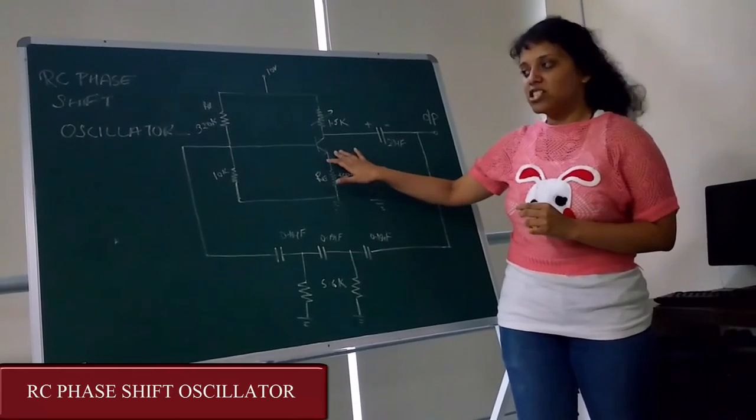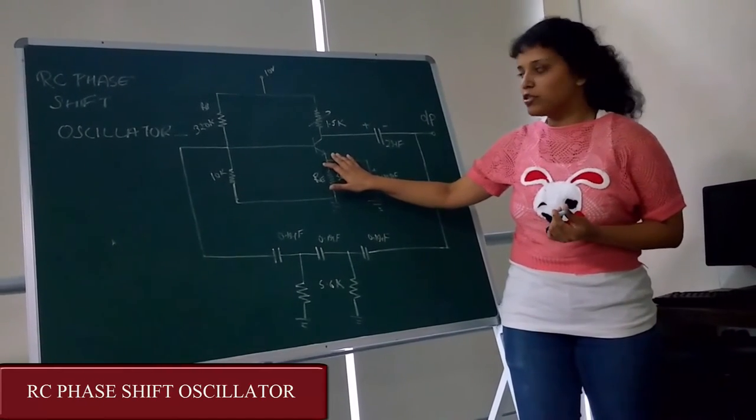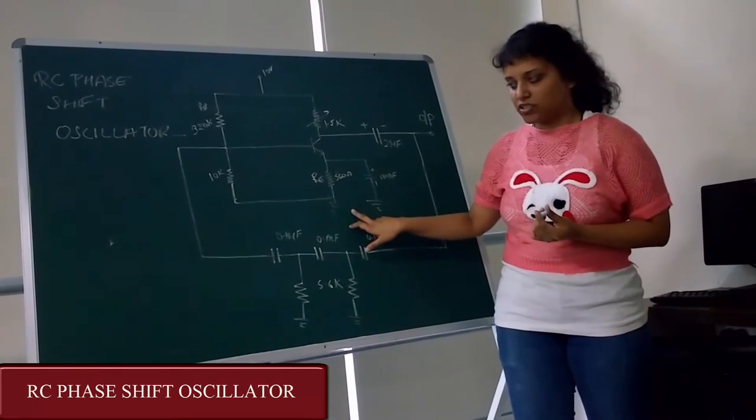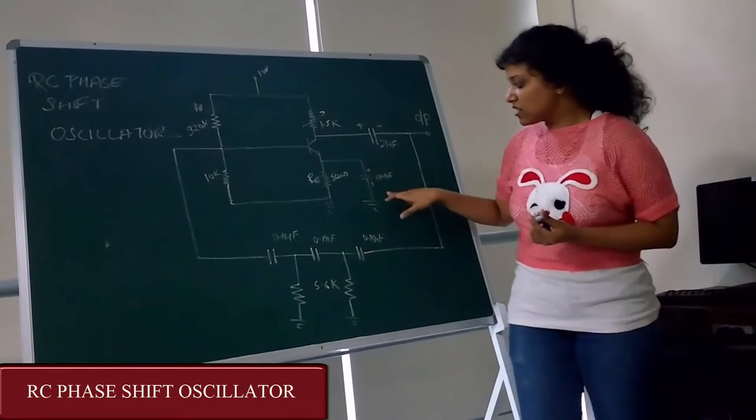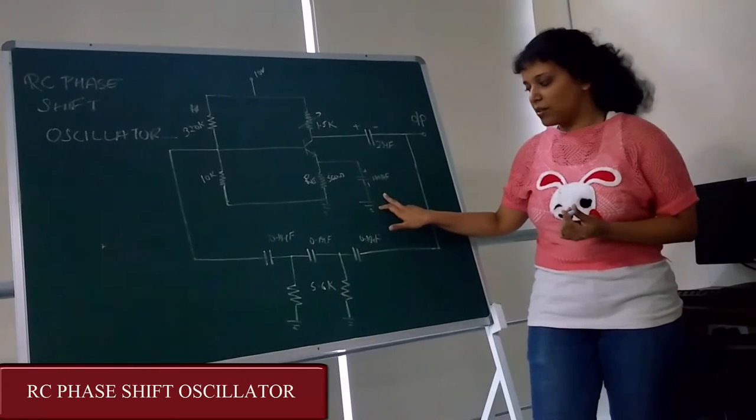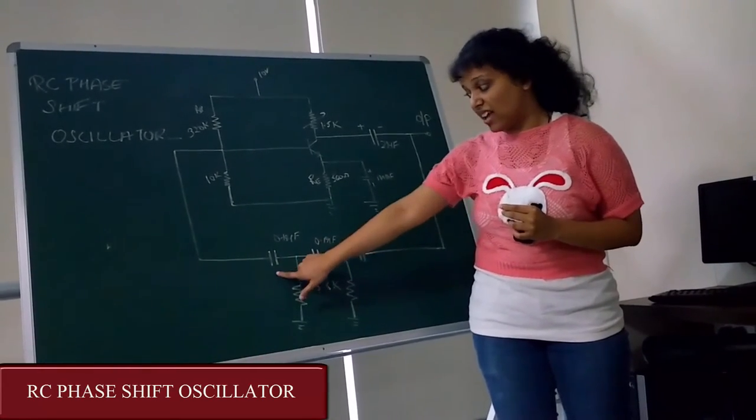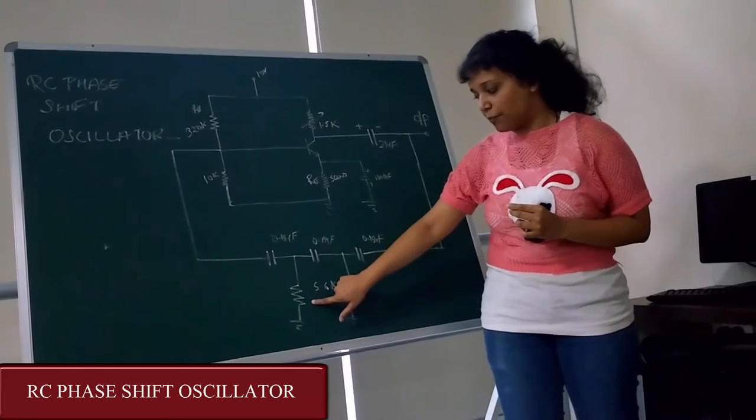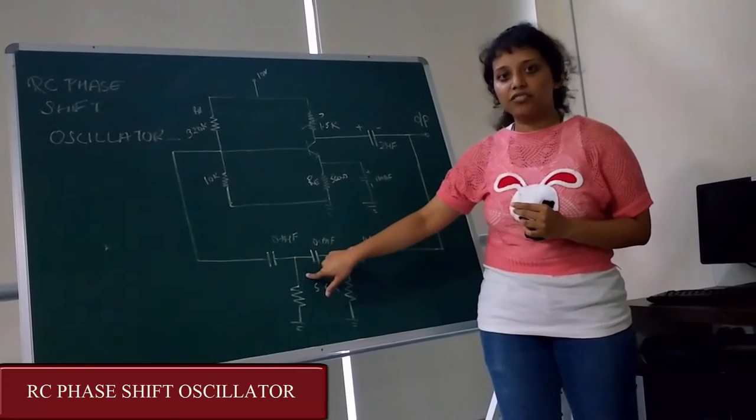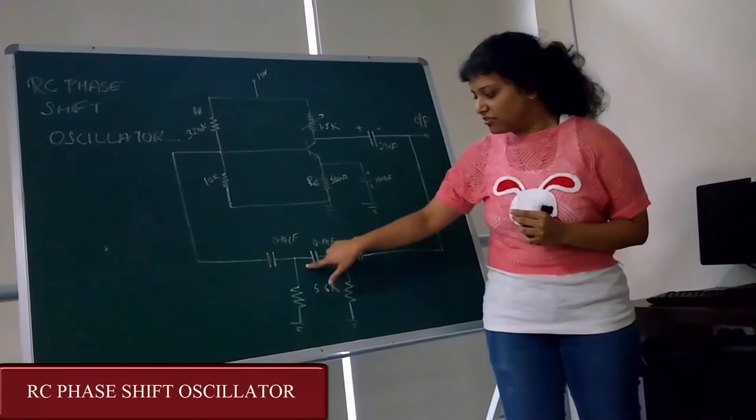Here the BJT which we are using is BC 547 which is in common emitter configuration. Here this capacitor acts as a bypass capacitor and this pair, that is a capacitor and a resistor pair, gives us a phase shift of 60 degree. We have three such pairs.